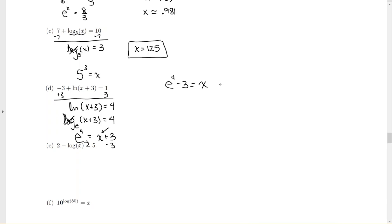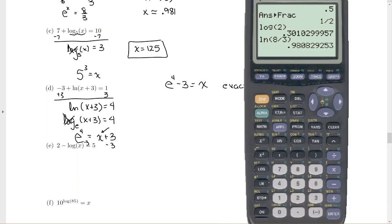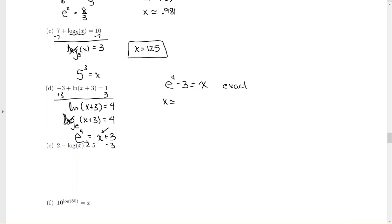Now your goal is to solve for x, so I need to move the plus 3 to the other side by subtracting it from both sides of the equation. So I have e to the fourth minus 3 equals x. This is my exact value. My approximation then means I go to my calculator and I take e to the fourth, so do 2nd ln to the fourth, and then subtract 3. So to 3 decimal places, it's 51.598. That's my approximation.